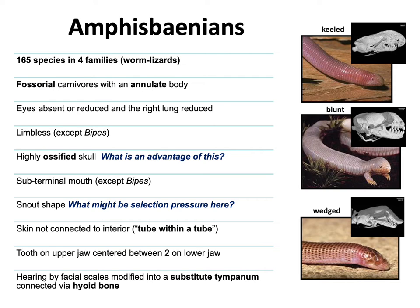The most interesting and bizarre thing about these animals is that their skin is not connected to anything inside their body — they're basically a tube within a tube. You can completely rotate an animal's skin around and around while holding all the organs constant — their skin is just a loose covering that can turn around their body at will. Think of being in a sleeping bag that wraps around in different ways — that's how they live. I find that mind-blowing.